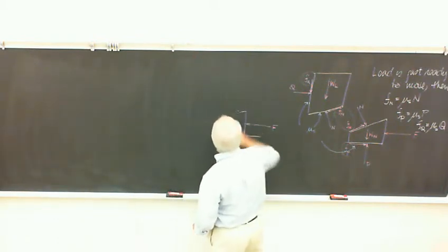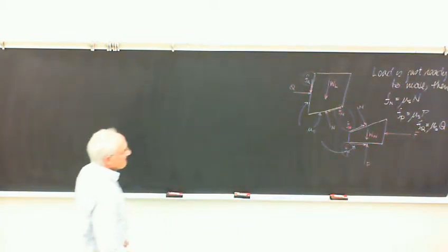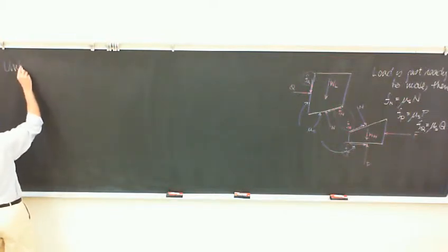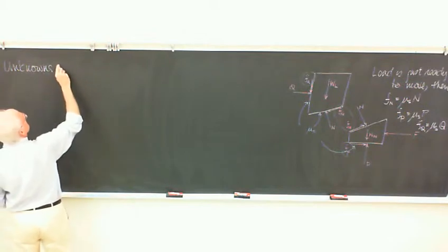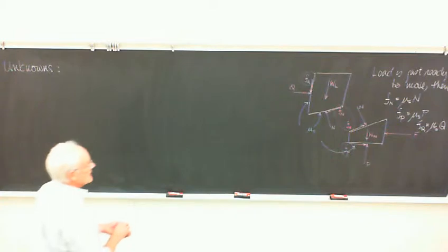So we know that then each of these will be at their respective maximums, which is that coefficient of friction times the normal force holding those two surfaces together. That helps. It reduces the number of unknowns. How many are there?